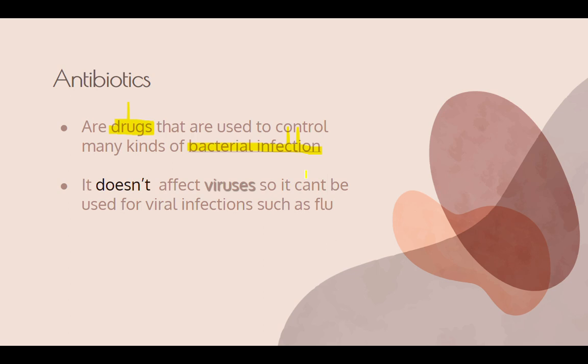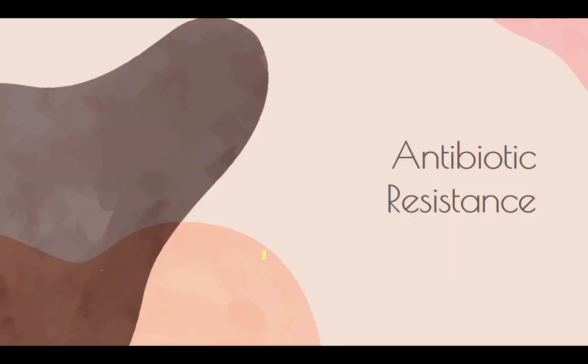What an antibiotic does is kill the cell wall of bacteria. By destroying the cell wall, the bacteria won't be able to reproduce, and in that way it can control bacterial infection. That's why antibiotics cannot kill viruses — viruses do not have a cell wall. That's also why we don't use an antibiotic for the flu.